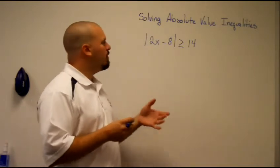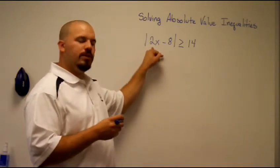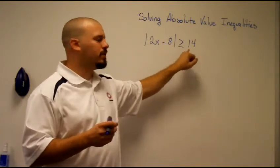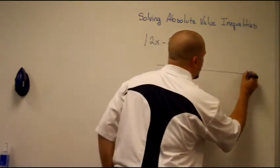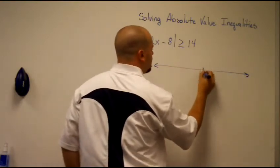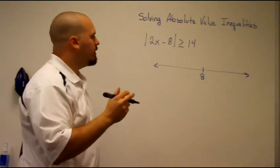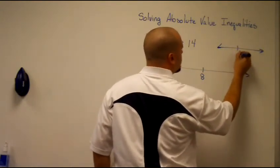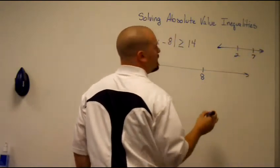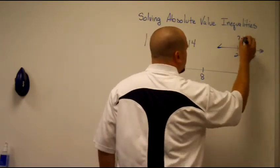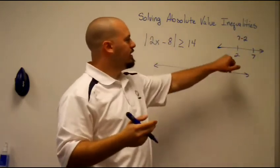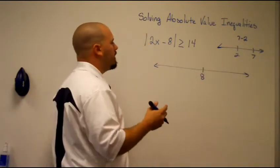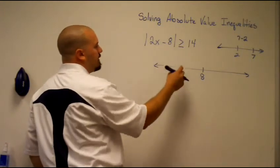Instead of the distance from zero, what we're looking at is the distance between 2x and 8, and that is greater than or equal to 14. So I'm going to plot 8 on a number line — and it's not negative 8. When you do a distance, say the distance between 2 and 7, you do 7 minus 2, and that's your distance. You subtract for distances on a number line, so 2x minus 8.